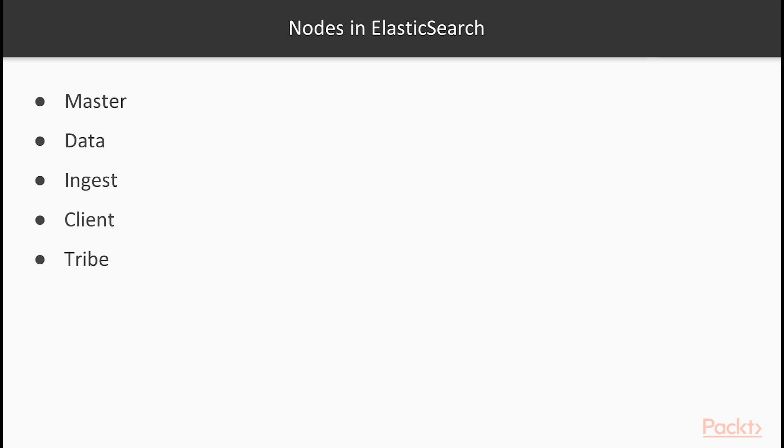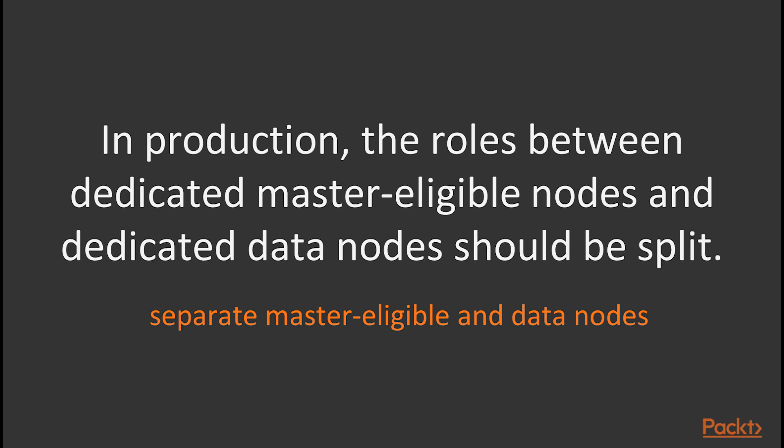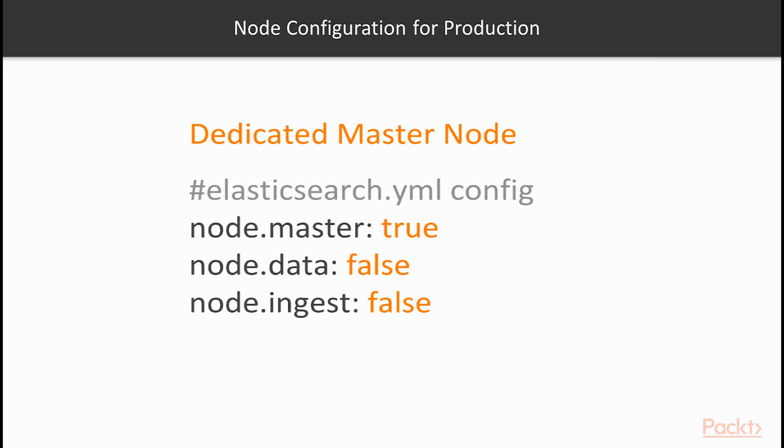We'll be looking deeper into the first three node types. A given node can serve one or more purposes — for instance, a master node can hold data and perform associated operations. However, due to the resource-intensive nature of data nodes, combined with the need for a stable master node to ensure cluster health, it is highly recommended that in production the roles between dedicated master-eligible nodes and dedicated data nodes be split. The good news is that master nodes are not resource-intensive, so not much additional overhead is generated by running this scheme.